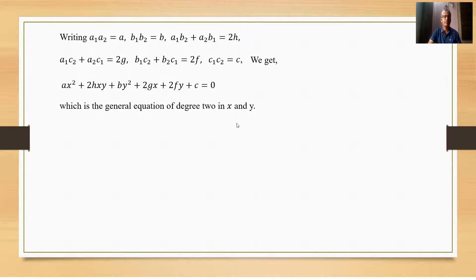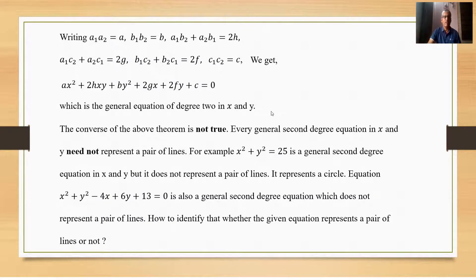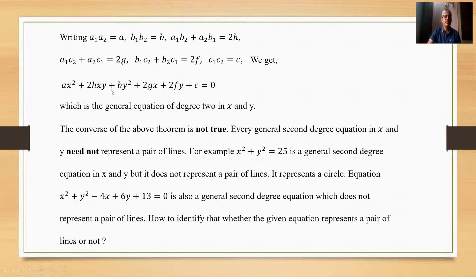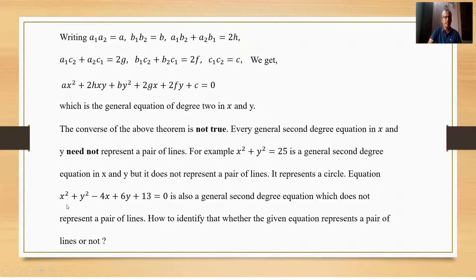The converse of the above theorem is not true — every general second-degree equation in x and y will not represent a pair of lines. For example, it may represent a circle. The equation x² + y² − 4x + 6y + 13 = 0 is also a general second-degree equation but does not represent a pair of lines.